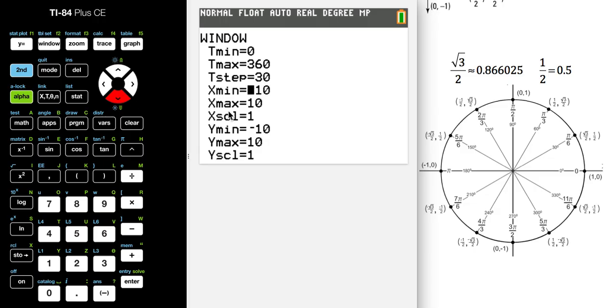For my x min I want negative 1.5, and for x max I want 1.5. This is going to set our window up so our entire circle shows inside our window. For y min we want negative 1, and for y max we want 1.